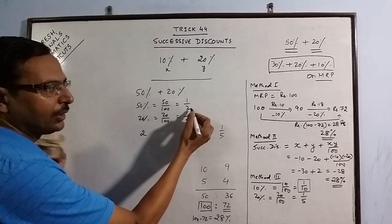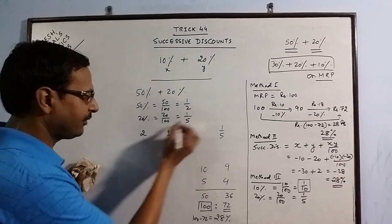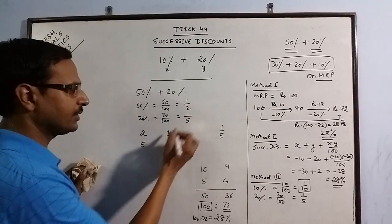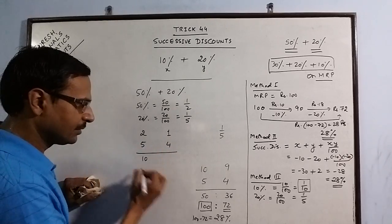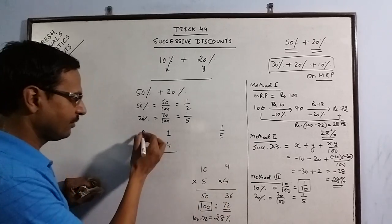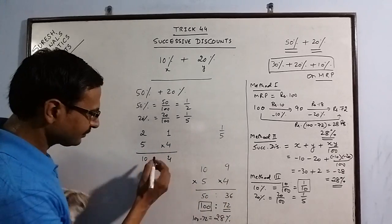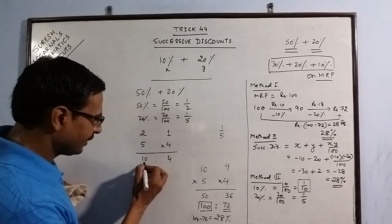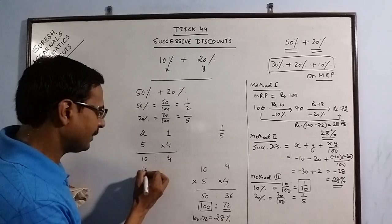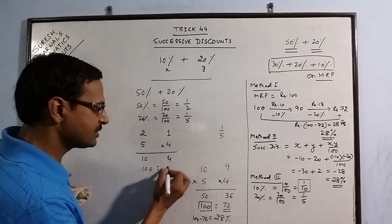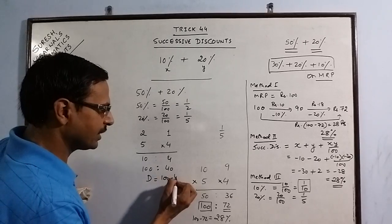So on 2 rupees you get a discount of 1, so you have to pay 1. On 5 rupees you get a discount of 1, so you have to pay 4. So 2 into 5 is 10, 1 into 4 is 4. So when the MRP is 10, you have to pay 4. So when MRP is 100, 10 times, you have to pay 40. So discount is 100 minus 40, that is 60%.